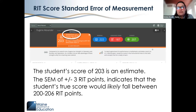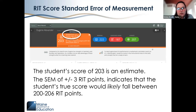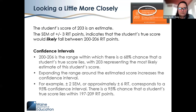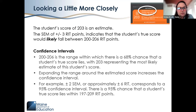Looking more closely at RIT score standard error of measurement: this is a screenshot from a sample student profile report available as part of the MAP Growth reports portfolio. Here we can see that the student's score of 203 in math is actually an estimate, and the SEM is plus or minus three RIT points. That indicates the student's true score would likely fall between 200 and 206 RIT points.